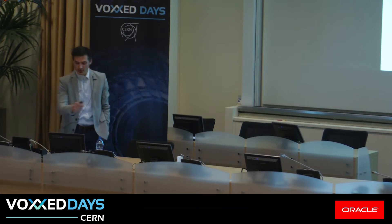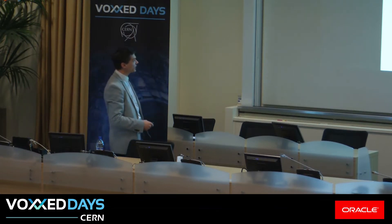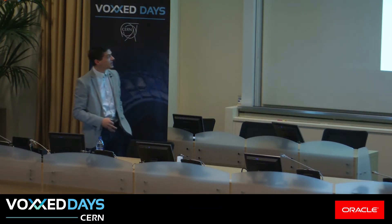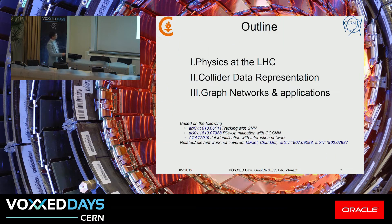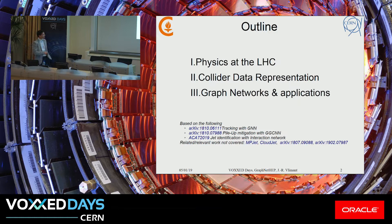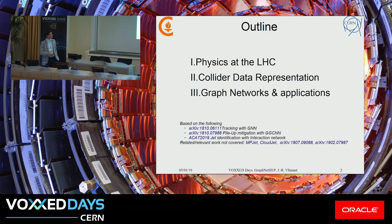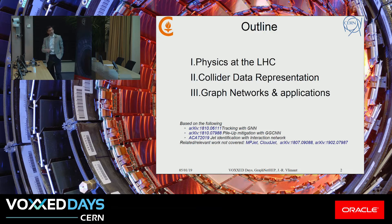What I would like to do today is try to get you interested in the exciting prospect of applying graph networks in high-energy physics. I'll do so by going through three different works that I've been collaborating on with other people, and I link here things that I'm not covering but are relevant and related. I'll do this by going quickly through the physics at the LHC, data representation, and that will lead me into graph networks in these three applications.